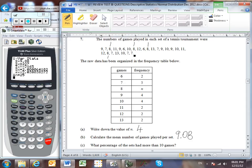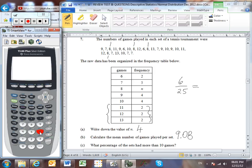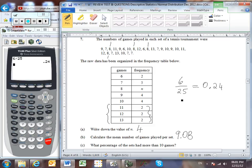What percentage had more than 10 games? Well, more than 10 games means that it was either 11, 12, or 13. So we can see then that there's a total of 6 of our 25 sets played. And it wants us to express it as a percentage. Well, 6 divided by 25 is equal to 0.24. And if I convert this into a percentage, I'm going to have to multiply it by 100% to convert it into a percentage. And that gives us an answer of 24% for part C.